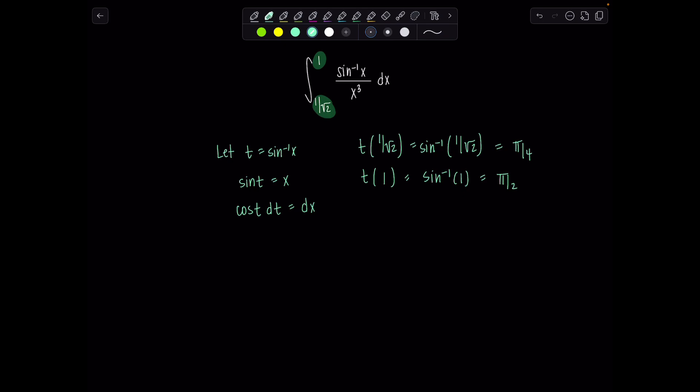So now we're ready to rewrite the entire integral all in terms of t. So we have definite integral now from pi over 4 to pi over 2, sine inverse of x, remember we're replacing that with t, over, and then instead of x cubed in the denominator, I'm going to have sine of t cubed. I'm going to write it like this, sine cubed t, and then dx gets replaced with, that's right, cosine t dt. How are we doing?